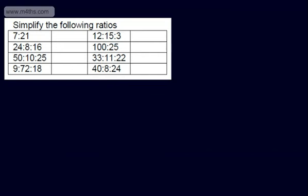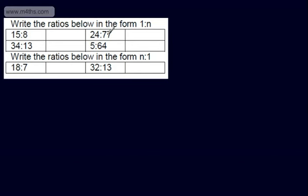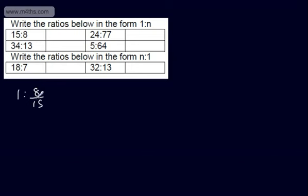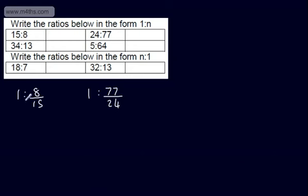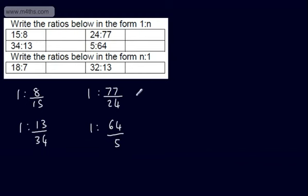We will look now at writing ratios in the form 1 to n, or n to 1. If we consider 15 to 8 as a ratio and we want to write this in the form 1 to n, all we need to do is divide through by 15, so we could write this as 1 to 8 over 15. You can leave this as a decimal if you wish, and it's wise to see if you can simplify. 8 over 15 we can't simplify anymore, so we would write it in the form 1 to n with n being 8 over 15. This one here: 1 to 77 over 24, and again if you wanted to write that as a decimal you could. Looking at that, we can't divide through by any values so we would leave it as is. This one right here would be 1 to 13 over 34, and this one: 1 to 64 over 5. So that's writing in the form 1 to n.